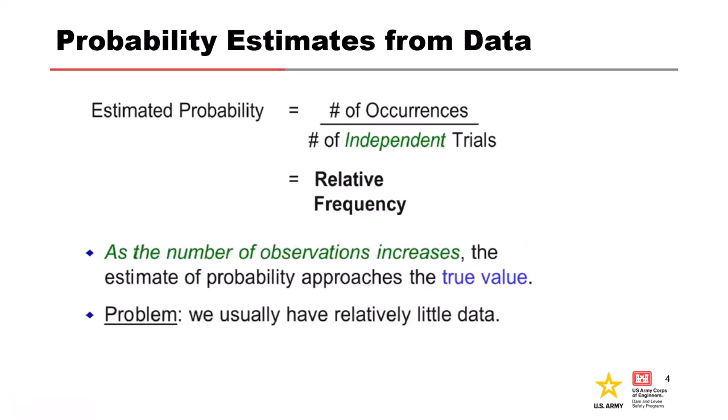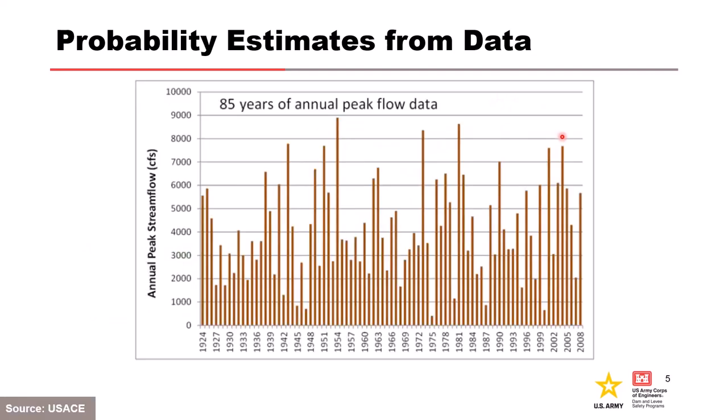Relative frequency is a very simple but effective method of estimating probability from observations. Outcomes that are more probable occur more frequently, and as an estimator, relative frequency improves as the number of observations increases. Unfortunately, the natural systems we work in usually provide a very limited number of observations that we can only increase with more time. Estimated probability and relative frequency is the number of occurrences divided by the number of independent trials. This is an example data set of the annual maximum flow value for each year for an 85-year period of record. This is a continuous random variable because flow can be any value in the range of probability for each year.